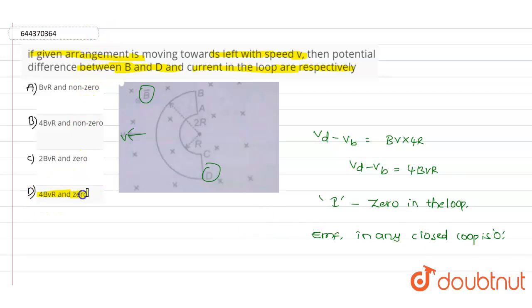...option D, 4BvR and 0. So this is the value of the potential difference across D and B, and 0 is the current value. So according to our obtained solution, option D is the correct answer for this question.